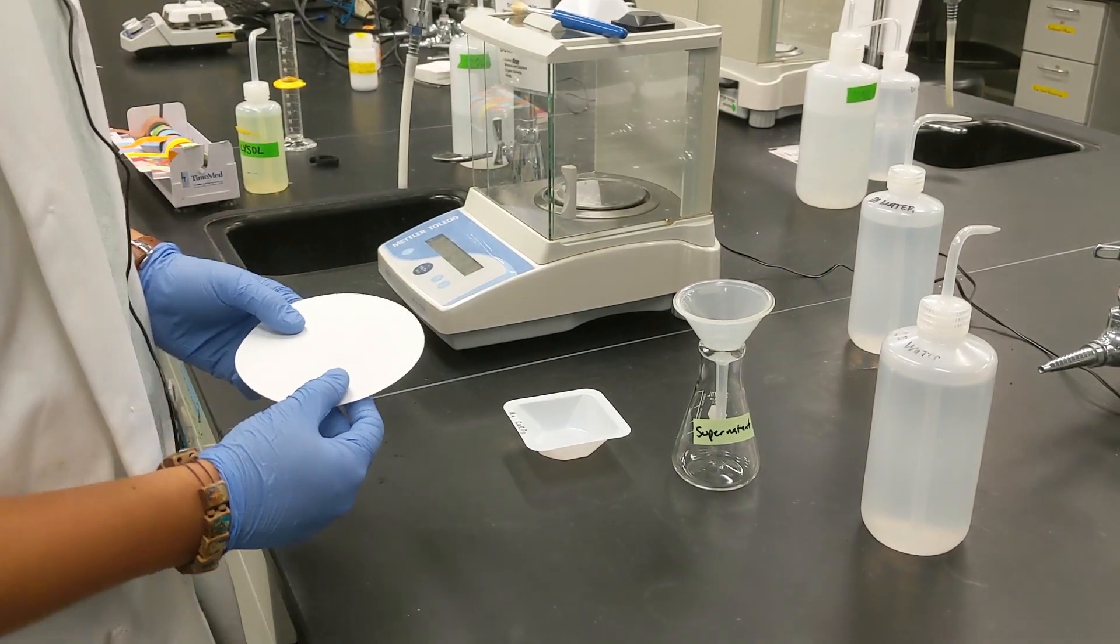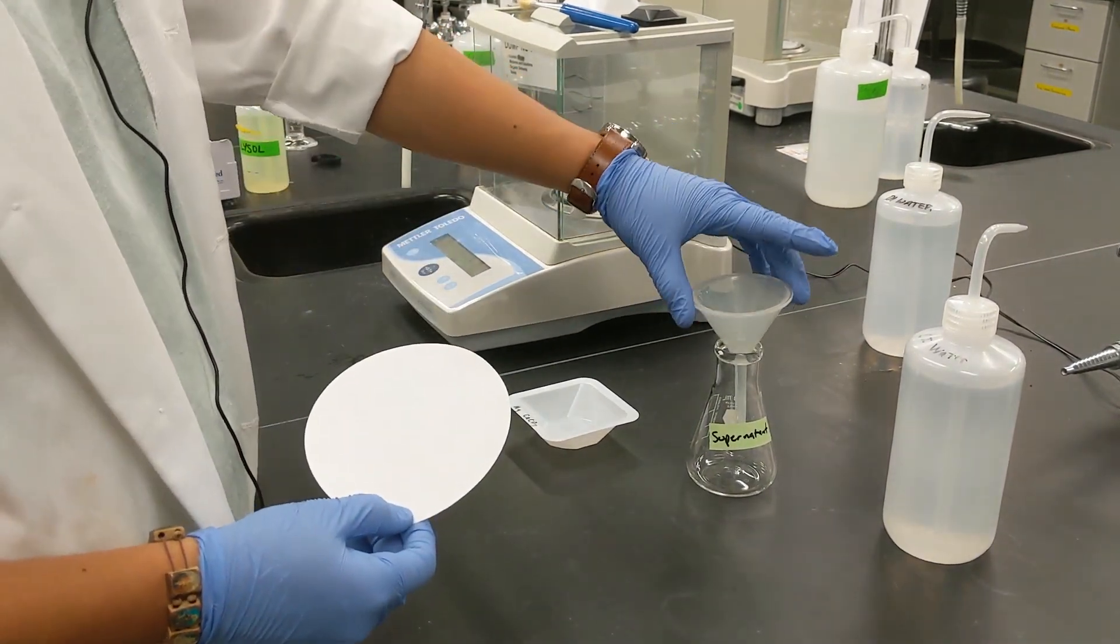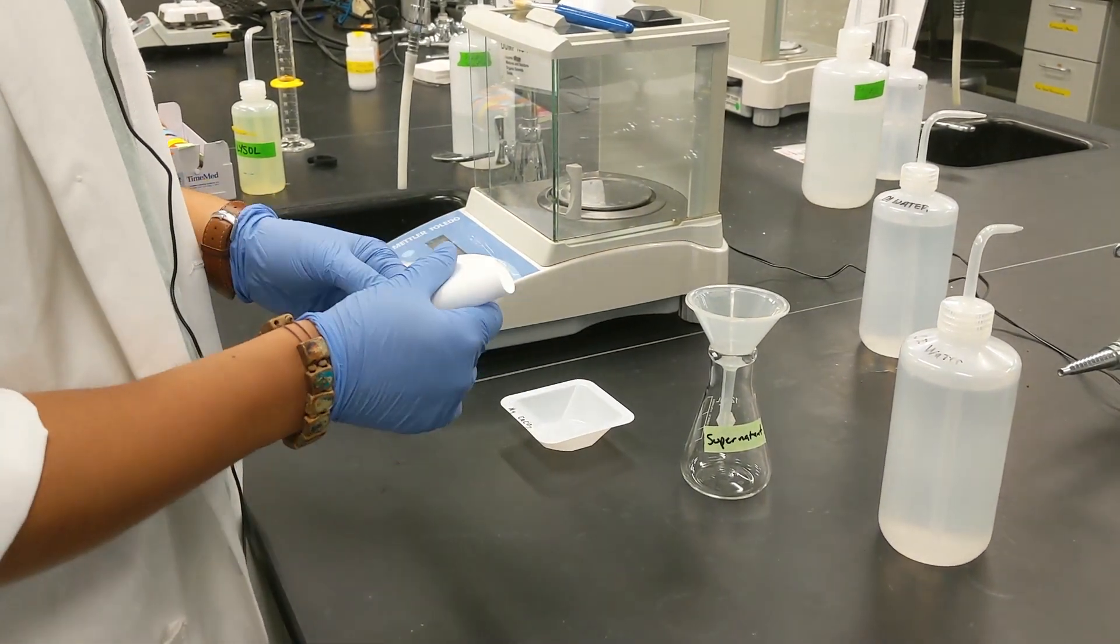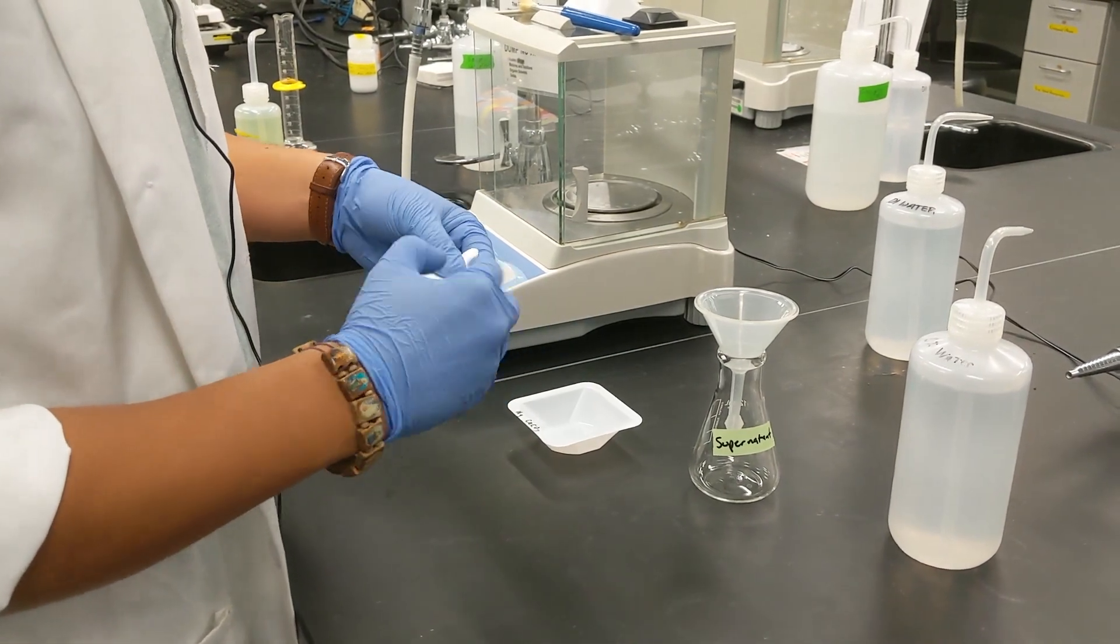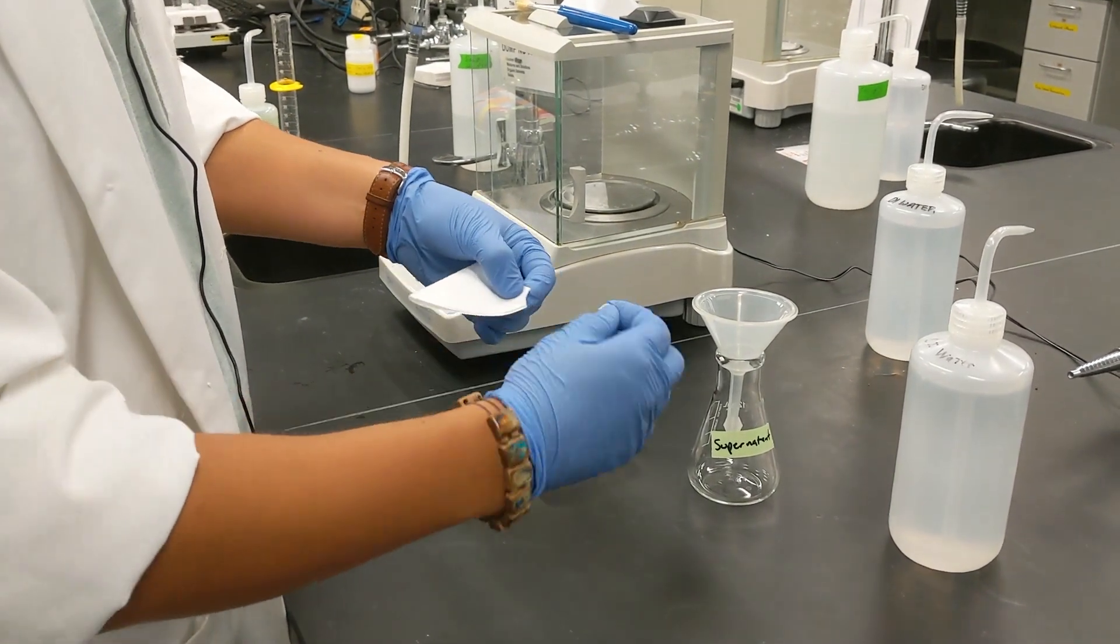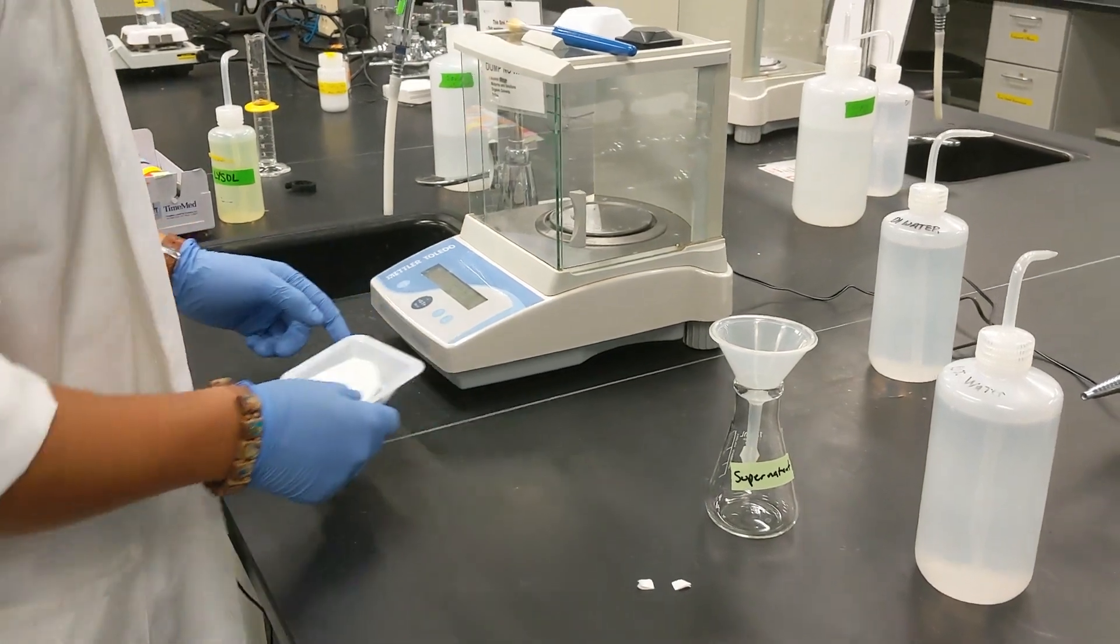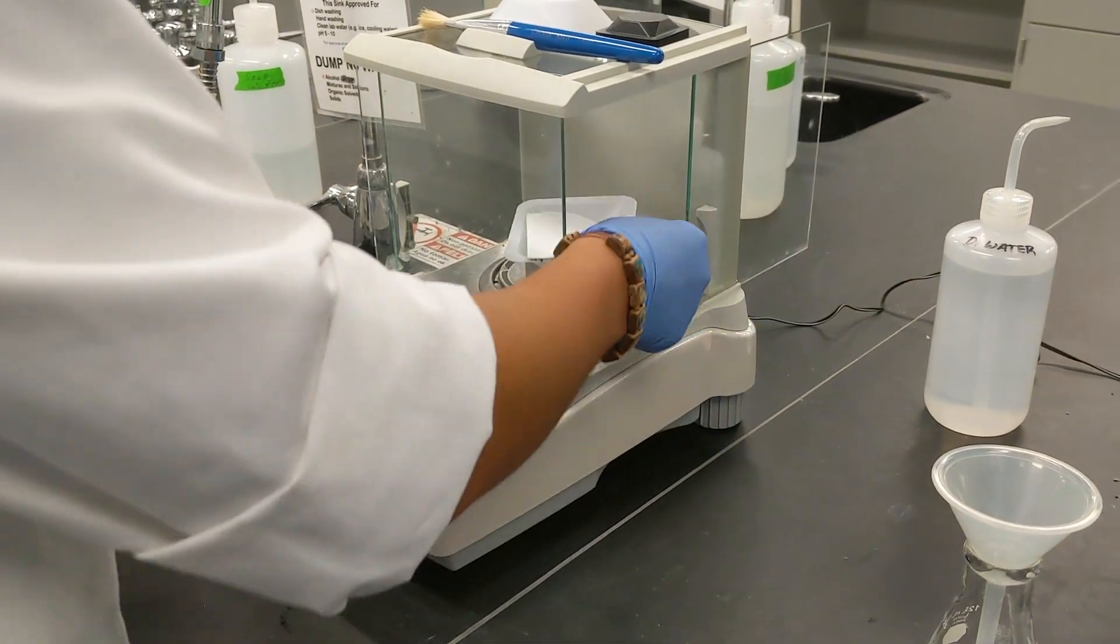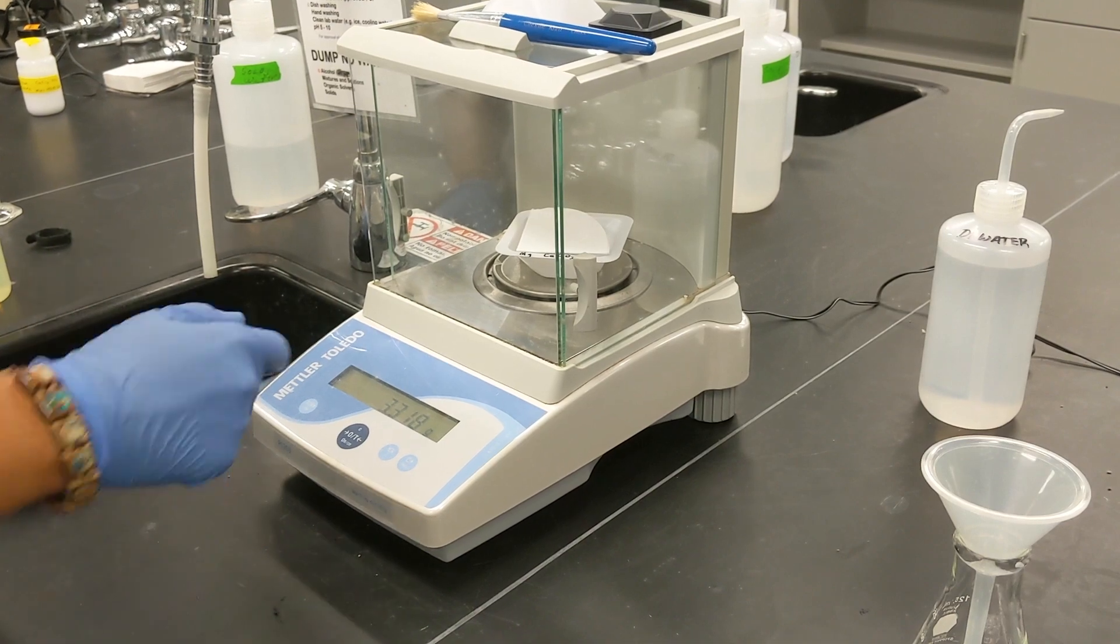Now we're going to set up our filtration device. We're going to have a weigh boat labeled. We have our filter and we have an Erlenmeyer flask here and our filter paper that we're going to fold in half. Fold this in half again to form a quarter circle and then we'll tear off a corner of our filter paper. We'll put this onto the weigh boat. We'll zero out our scale because we need to weigh this first. Let it equilibrate. We'll record that mass.